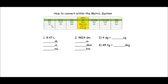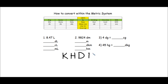Right now you're probably wondering how do we use this chart to convert within the metric system? Well, let's take a look at this problem right over here. We have 8.47 liters, and we have to change that or convert it to deciliters, centiliters, and milliliters. The first thing we're going to do is go ahead and write down the initials of each of the letters in the mnemonic sentence: King Hector died by drinking chocolate milk.